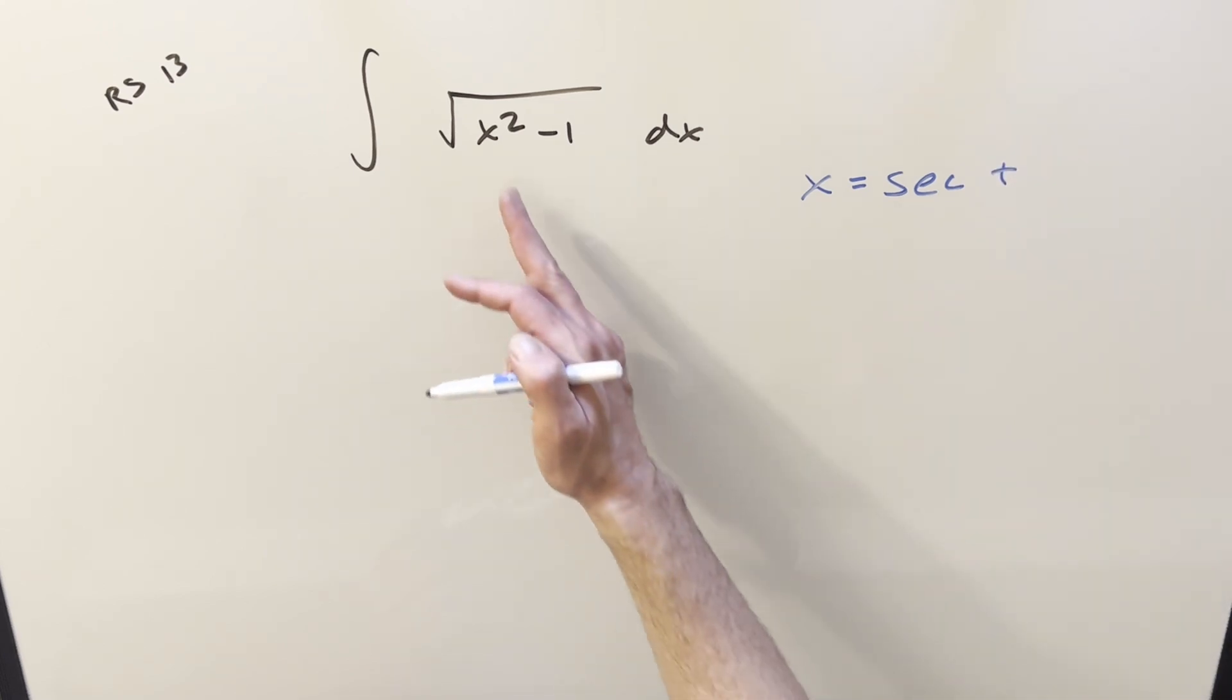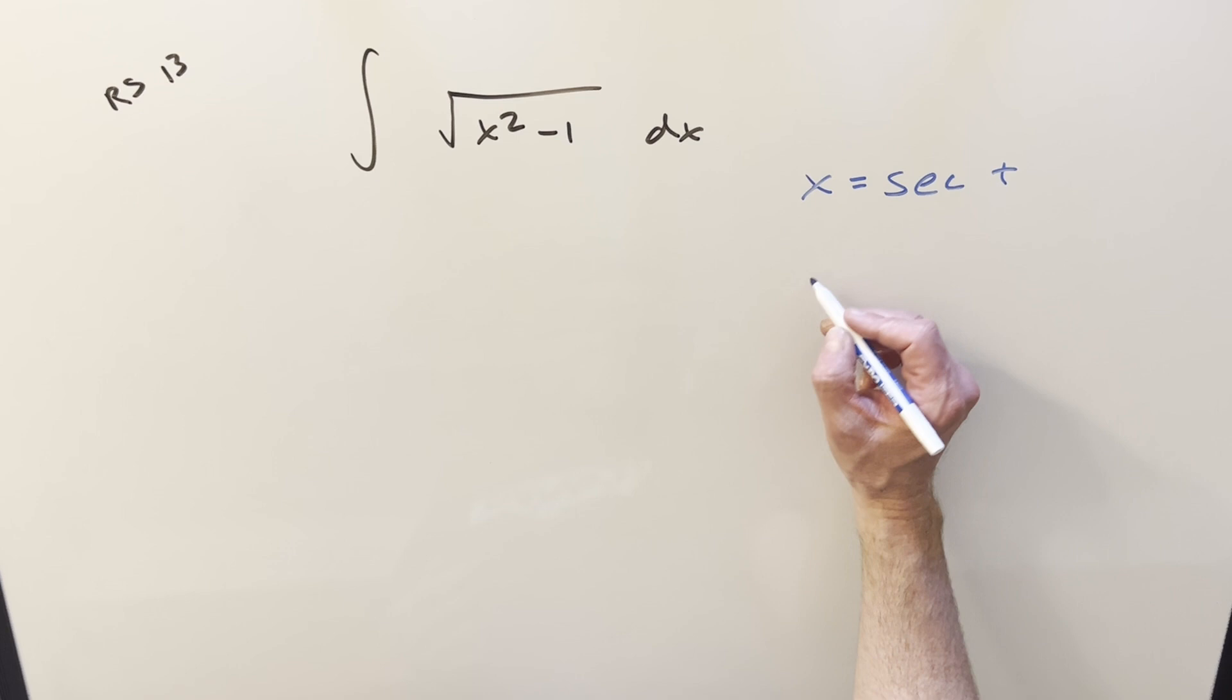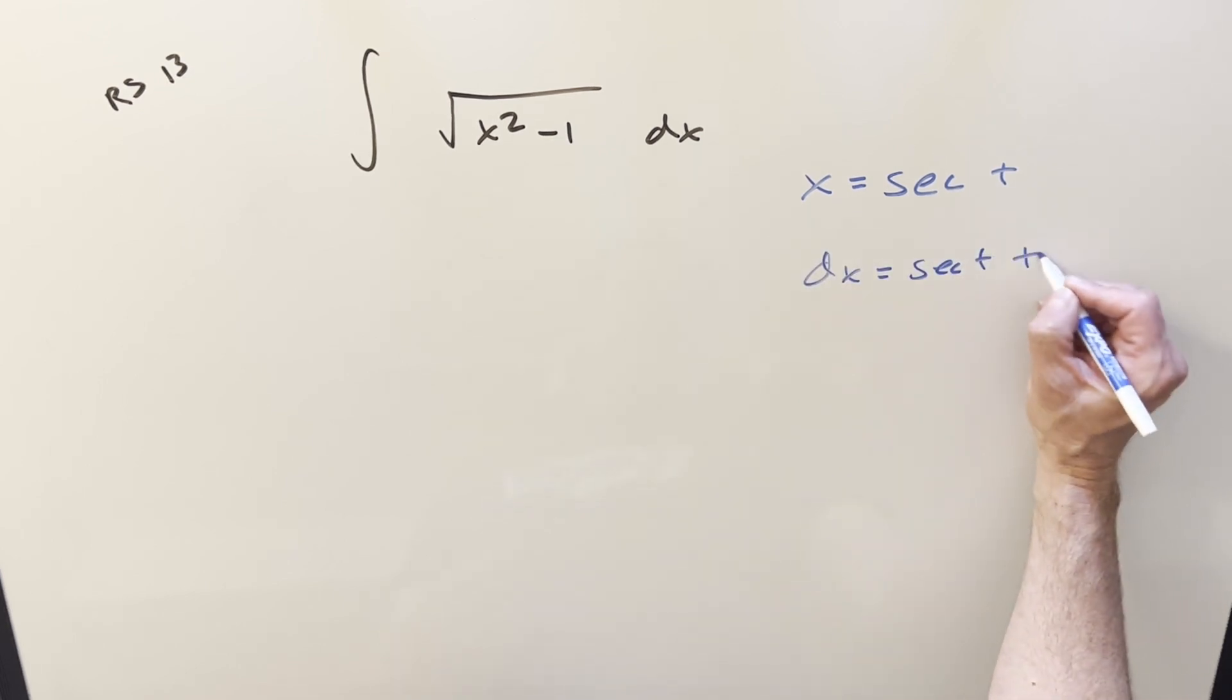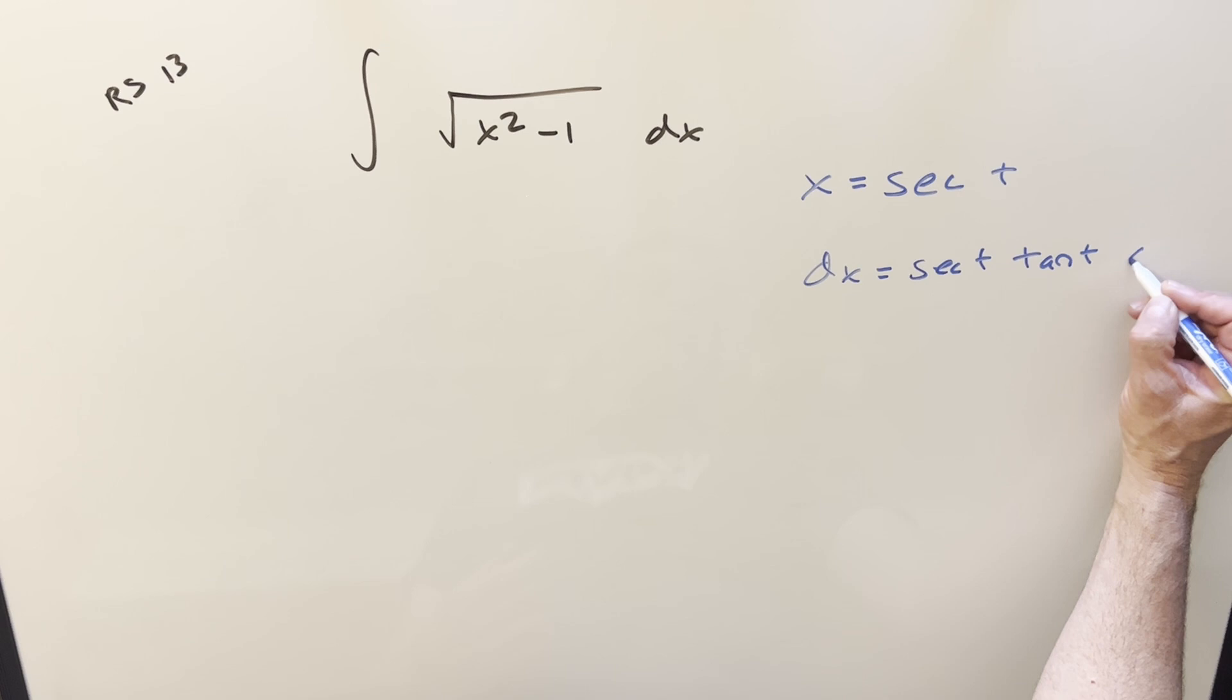So I'm going to do trig substitution on it, substituting in secant t for x. So then our dx value is going to be just secant t tan t dt.